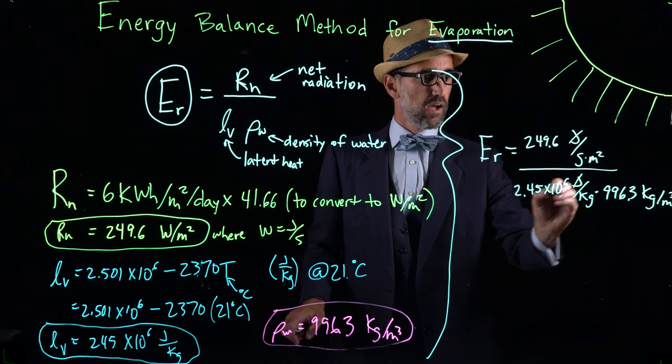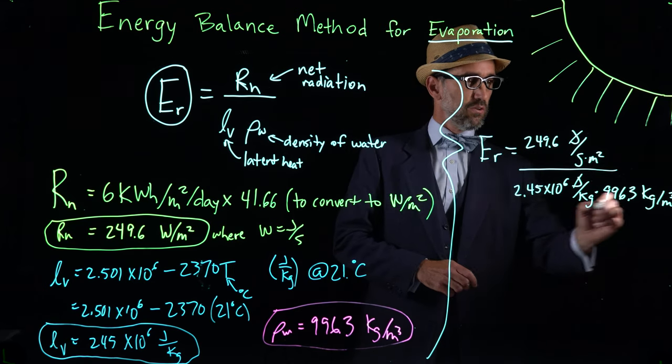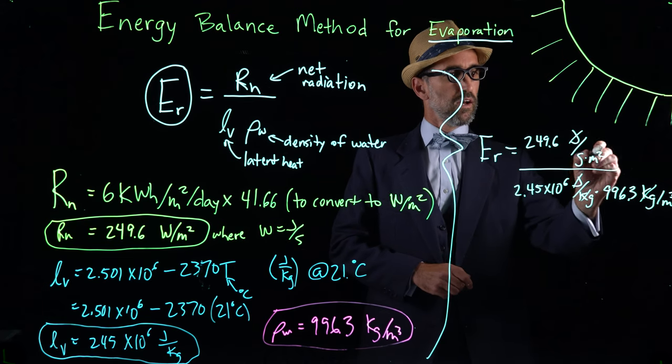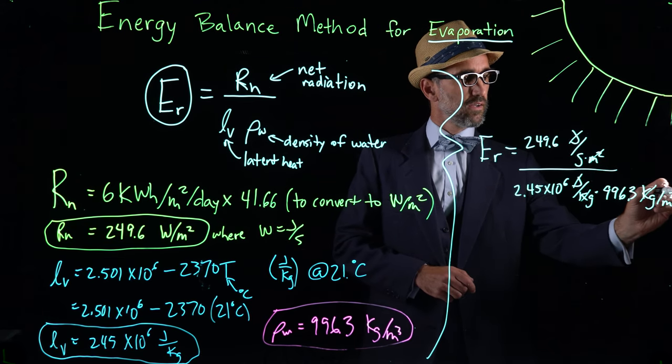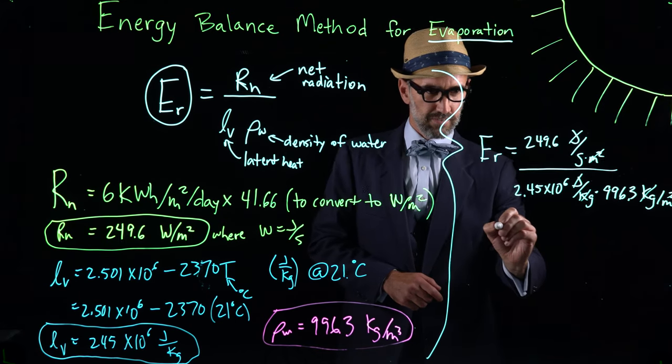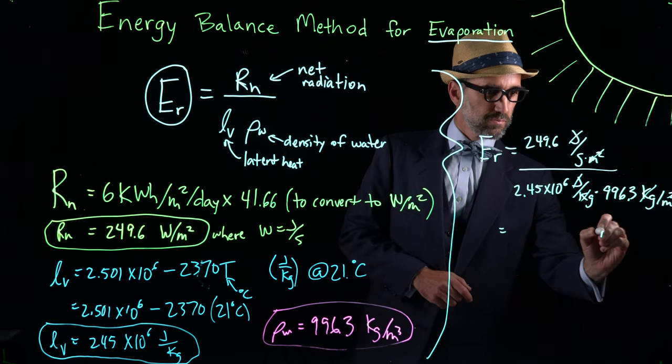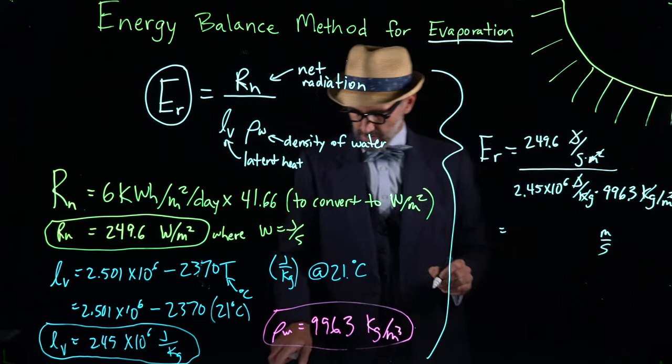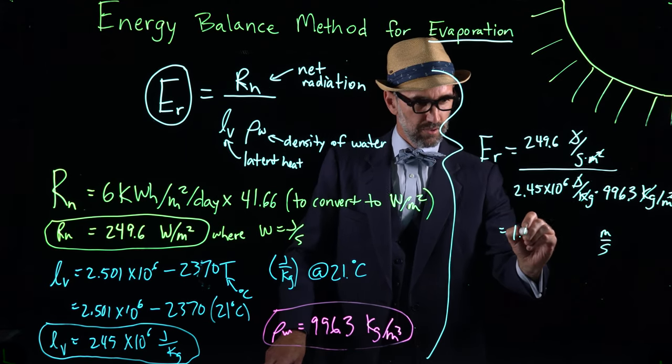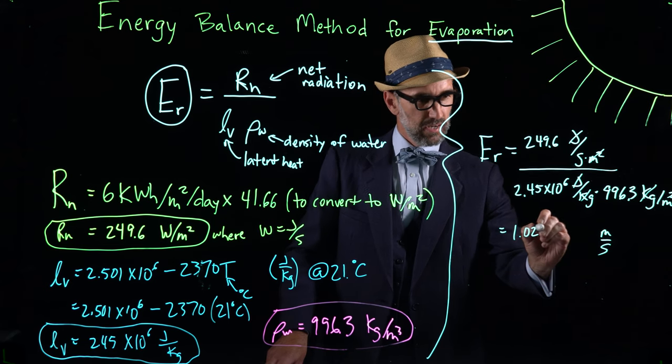And we'll just do a unit check. We have joules on top and bottom. There's kgs as well as meters squared. And so the result units is meters per second. And the resultant value is 1.02 times 10 to the negative 7.